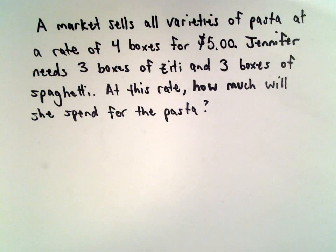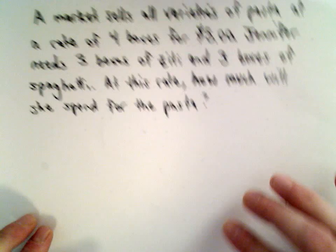A market sells varieties of pasta at a rate of four boxes for five dollars. Jennifer needs three boxes of ziti and three boxes of spaghetti. We want to know at this rate how much will she spend for the pasta.